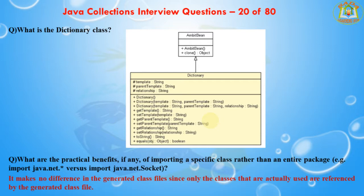An error arises when two or more packages have a class with the same name. Take java.util.Timer and javax.swing.Timer, for example. If you import java.util.* and javax.swing.* and then try to use Timer, you get a compile error because the class name is ambiguous between both packages. If what you really want is javax.swing.Timer, and the only other classes you plan on using are java.util.Collections and HashMap, some people will prefer to import java.util.Collections and java.util.HashMap instead of java.util.*.